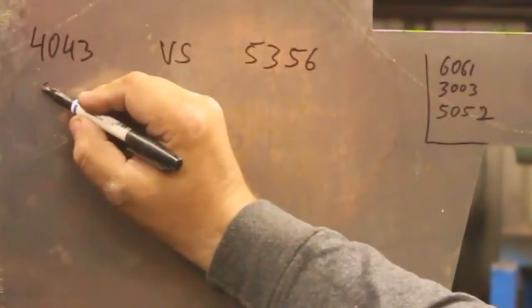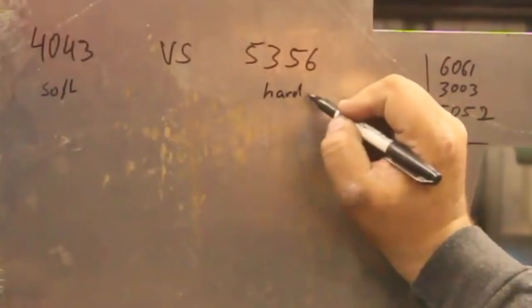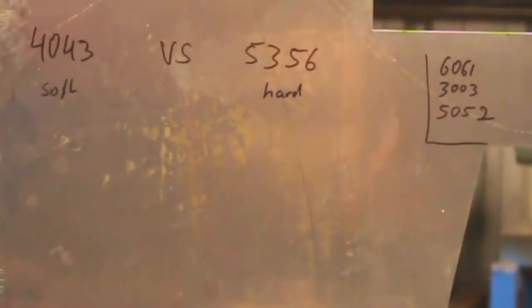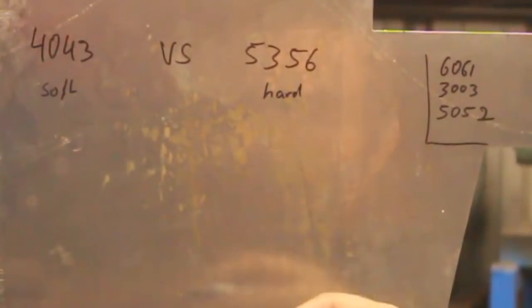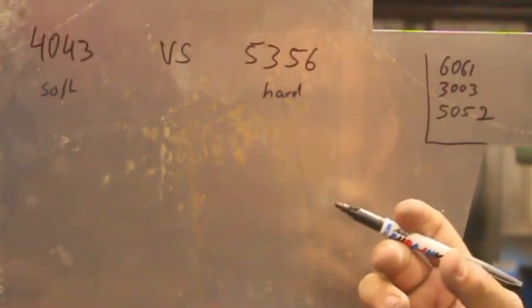4043 is very soft. 5356 hard. Hard wire technically feeds better through a longer gun and it's less prone to be crushed by drive roads that are set to tough.